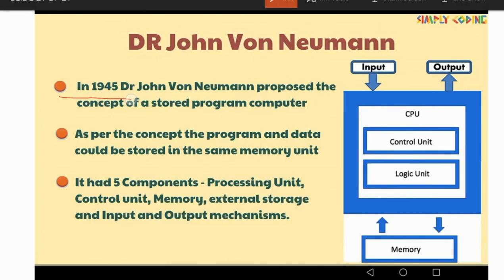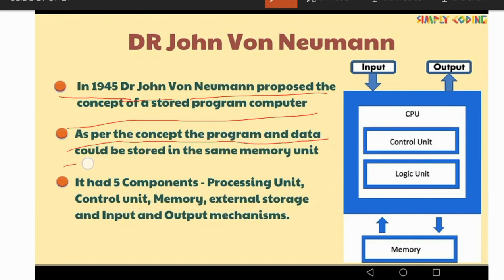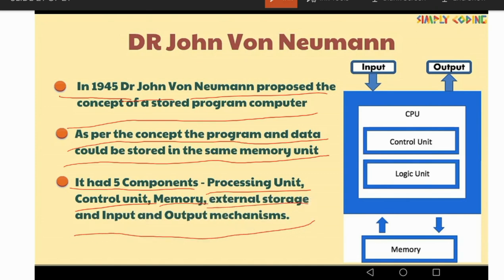In 1945, Dr. John Von Neumann proposed the concept of a stored program computer. As per this concept, the program and data could be stored in the same memory unit. It had 5 components: processing unit, control unit, memory unit, external storage, and input and output mechanism.